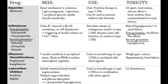Second generation sulfonylureas include glyburide, glimepiride, and glipizide. Because sulfonylureas act to increase the release of insulin, the major side effect is hypoglycemia, and this risk is increased in patients with renal failure.